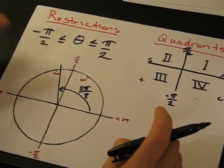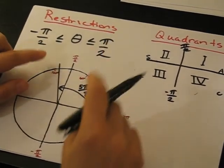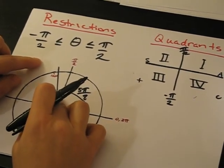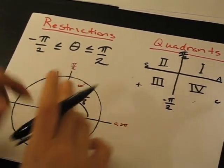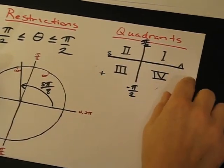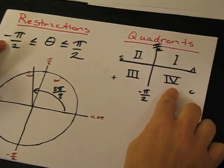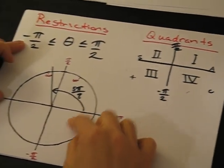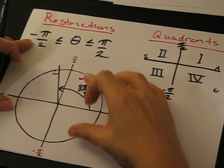Now the next thing we need to look at is we need to be within our restriction. So we're going to move this angle so that it's within the correct quadrant based on our restriction. So looking at our quadrants, we have quadrant one, two, three, and four. We are required to be within quadrant one and four. These are these two quadrants here because it's the pi over two and the negative pi over two restriction.